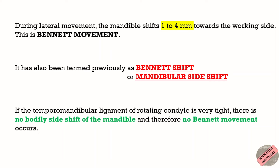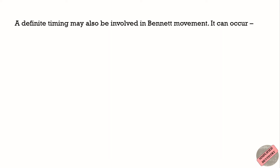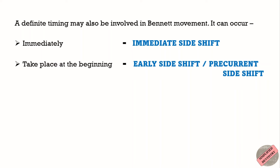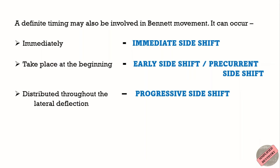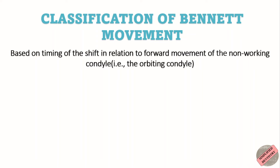A definite timing may also be involved in Bennett Movement. It can occur immediately, take place at the beginning, or be distributed throughout the lateral deflection. This is termed as immediate, early, or progressive side shift respectively. Bennett Movement is classified based on the timing of the shift in relation to the forward movement of the non-working condyle, i.e. the orbiting condyle.